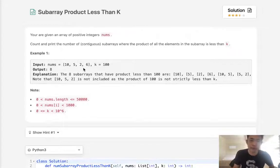You can see [10, 5, 2] doesn't count because it equals 100, which is not less than k.